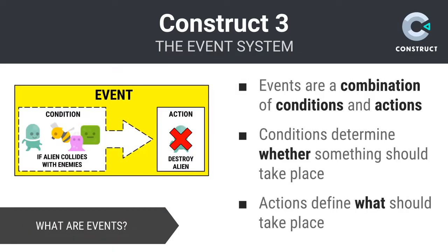Some terminology will be helpful here. Events in Construct are essentially a combination of conditions and their corresponding actions. You can think of a condition as a logical check, something you can test for. An example condition might be whether the alien is colliding with a member of the enemy's family. If this conditional test was met, if it was in fact true, then you could perform a series of prescribed actions. Otherwise, you could choose to perform other actions or nothing at all. Conditions are whether some set of circumstances are in effect or not. On the other hand, actions are what to do in response.